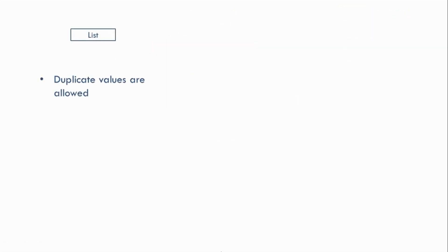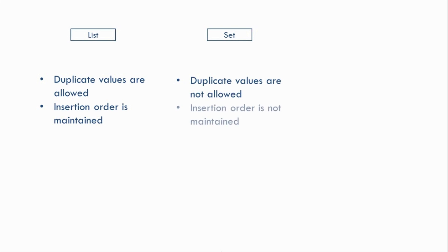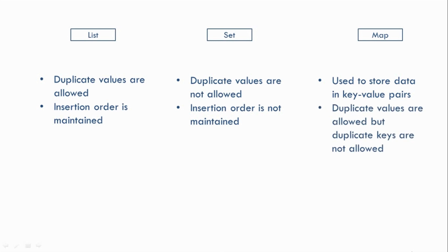In the case of List, duplicate values are allowed and insertion order is maintained. When I say insertion order is maintained, it means elements will be displayed in the same order in which they were inserted. In the case of Set, duplicate values are not allowed and insertion order is not maintained. Finally, Map is used to store data in key-value pairs — duplicate values are allowed but duplicate keys are not, and insertion order is not maintained.